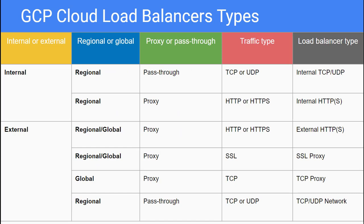Let's take a look at this summarized GCP cloud load balancer types table, including whether the load balancer uses an internal or external IP address, whether the load balancer is regional or global, and supported pass-through or proxy-based load balancing and traffic types. You can set up global load balancing on HTTP, HTTPS, SSL proxy, and TCP proxy. TCP and UDP traffic is always set up with pass-through, regional-based load balancing regardless of whether traffic comes from external or internal.